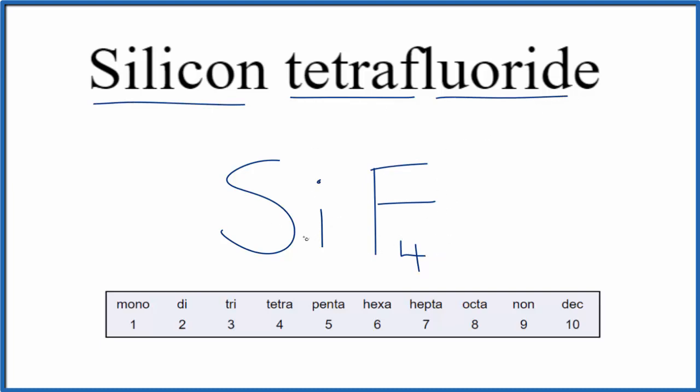If you were given the formula SiF4 and asked to write the name, you need to recognize that you have a metalloid and a nonmetal, so you need to use these prefixes here when you write the name. This is Dr. B with the formula for silicon tetrafluoride, SiF4. Thanks for watching.